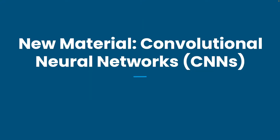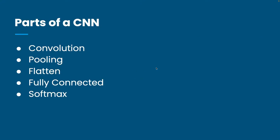So we don't want to destroy the spatial data — we want to keep it together. That's why we're going to use a new architecture called a convolutional neural network. A CNN has several parts: convolutional layers, pooling layers, a flattening operation, fully connected layers, and finally a softmax.